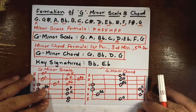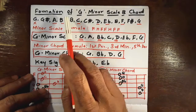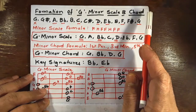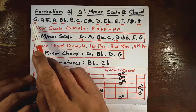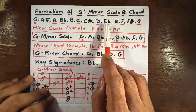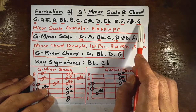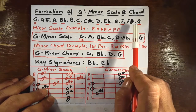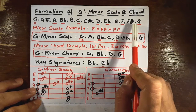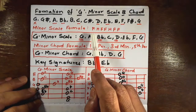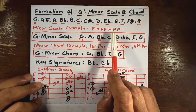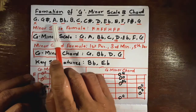Today we will check out the formation of G minor scale and G minor chord. Let's start with the chromatic scale of G: G, G sharp, A, B flat, B, C, C sharp, D, E flat, E, F, F sharp, G. Now to this chromatic scale we have to apply the formula of minor scale. The minor scale formula is: F H F F H F F.